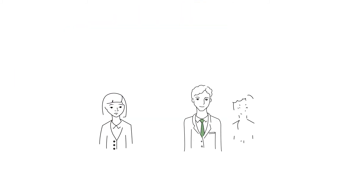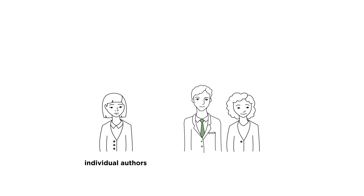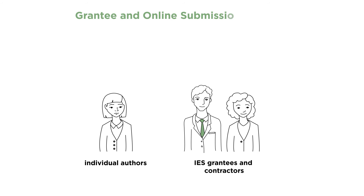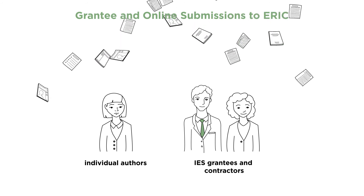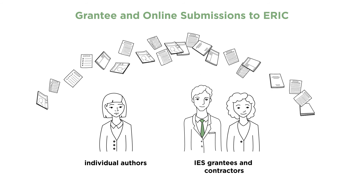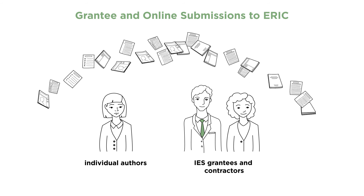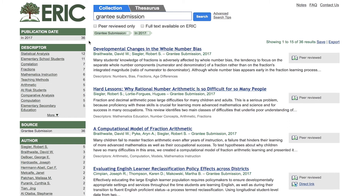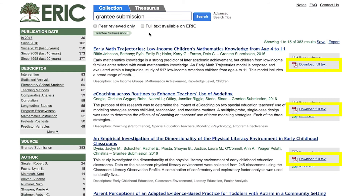You can also obtain full-text materials provided by individual authors and IES grantees and contractors who submit their work to ERIC through the online submission system. Individual authors agree during submission to make their work immediately available in full-text. Grantees and contractors have an agreement with IES to provide their final peer-reviewed manuscripts to ERIC as part of the IES public access policy. These submissions will appear in ERIC following upload to the online submission system and the full-text will display one year after publication.